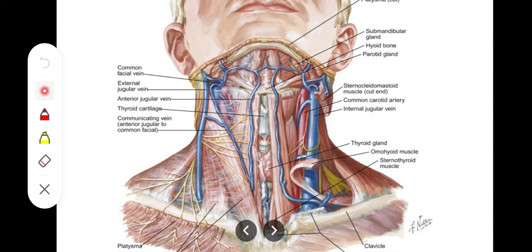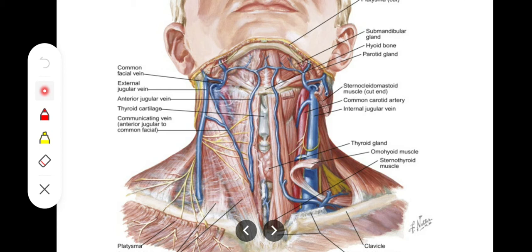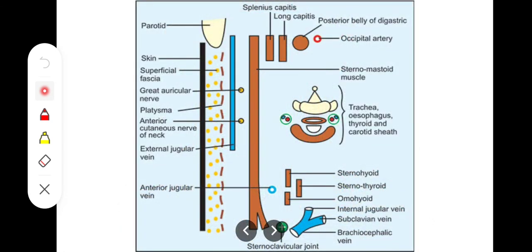Additional deep muscle relations include the levator scapulae, splenius capitis, longissimus capitis, and the posterior belly of the digastric muscle. We will study these muscles separately, but for now remember: splenius capitis, longissimus capitis, posterior belly of digastric, levator scapulae, and the scalene muscles are all present in the deep relations.